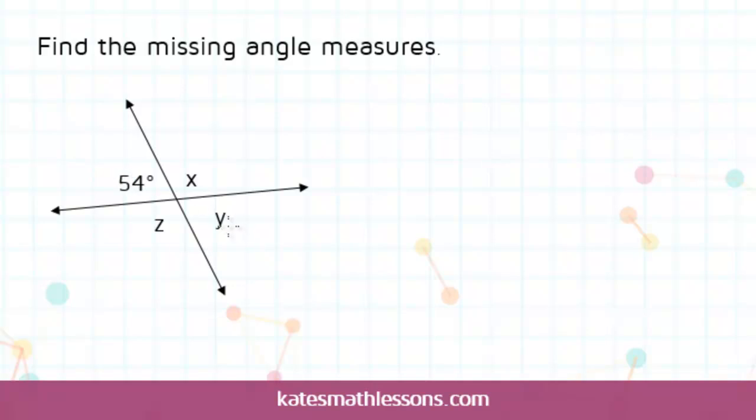So 54 and y, those are vertical, and x and z, those are vertical angles. And one important thing that we know about vertical angles is that vertical angles are always congruent.